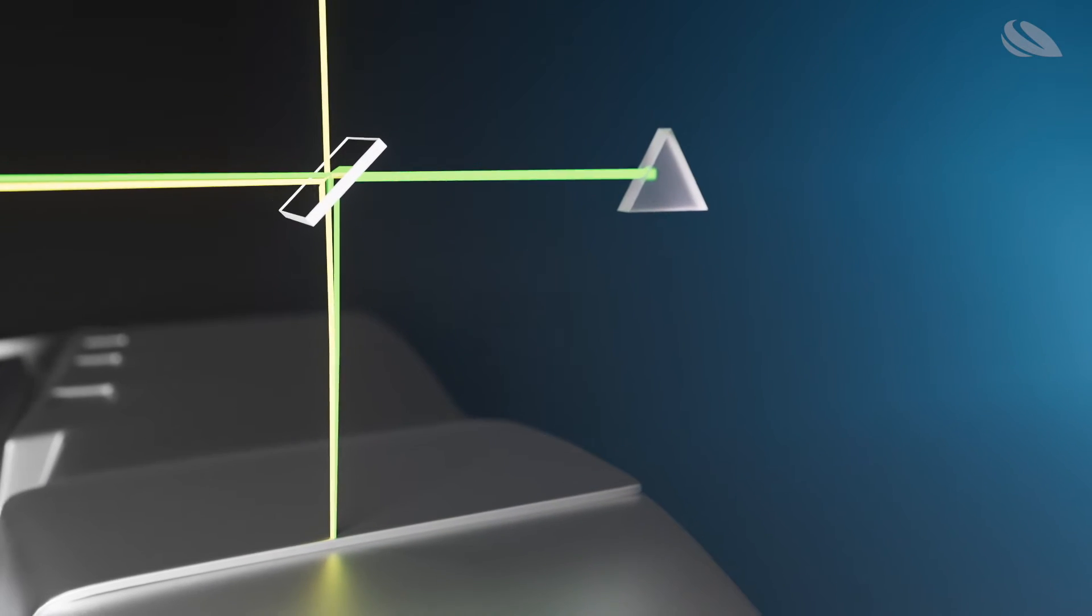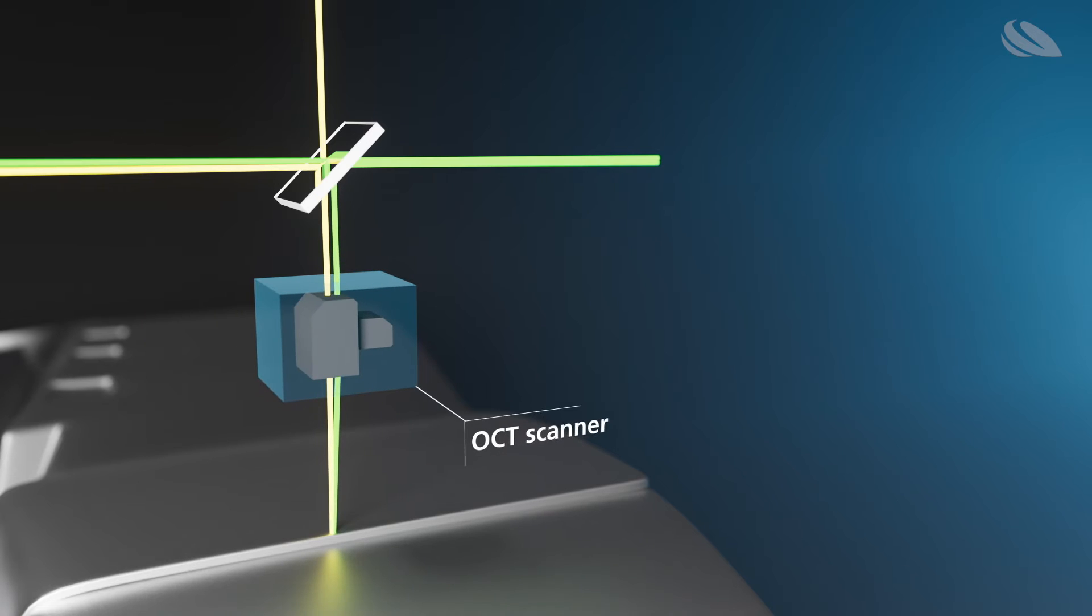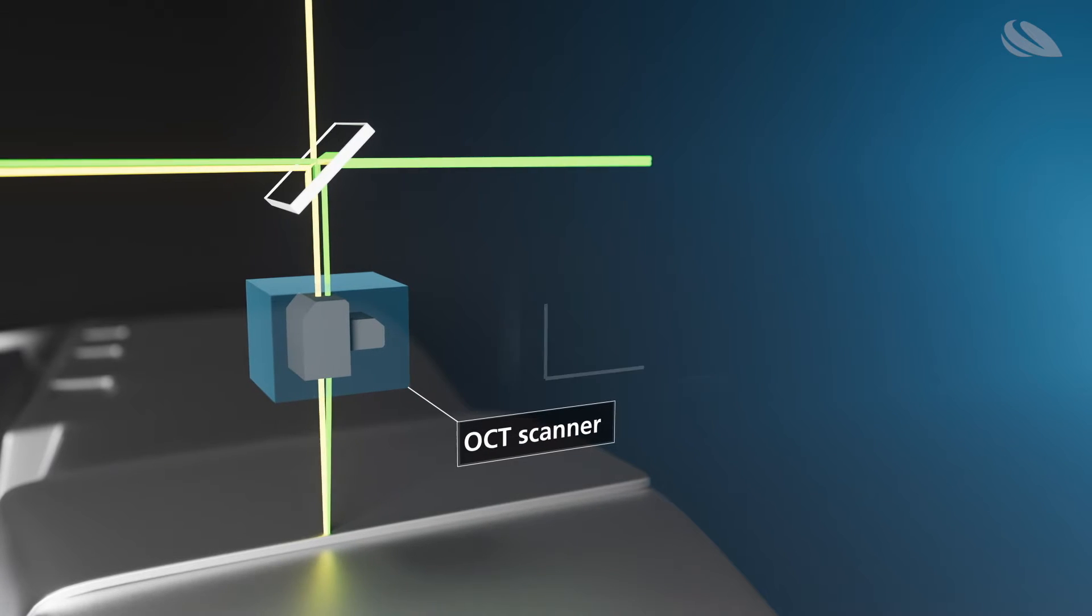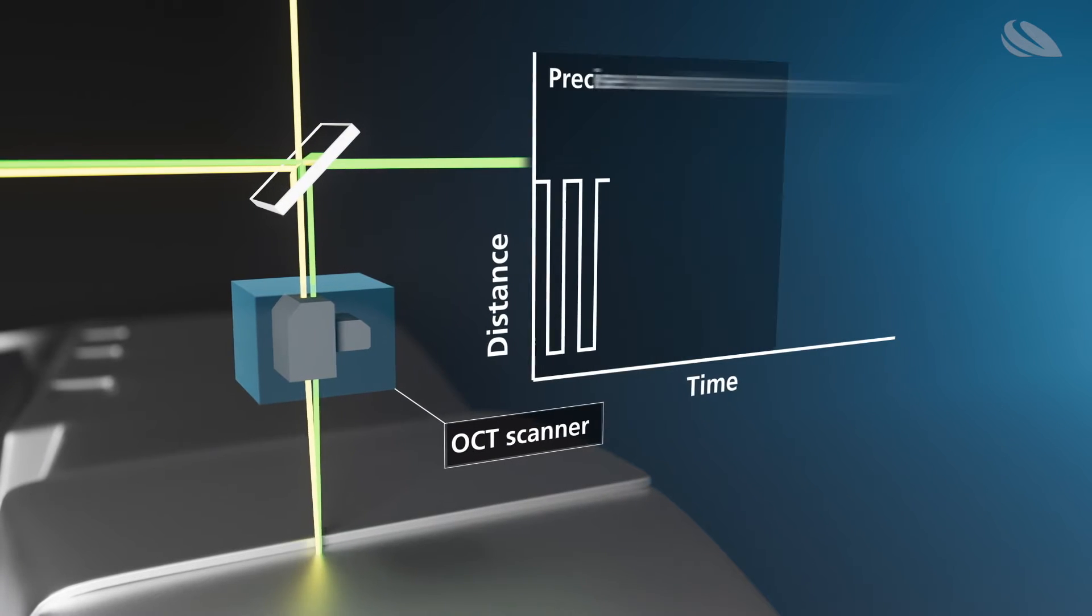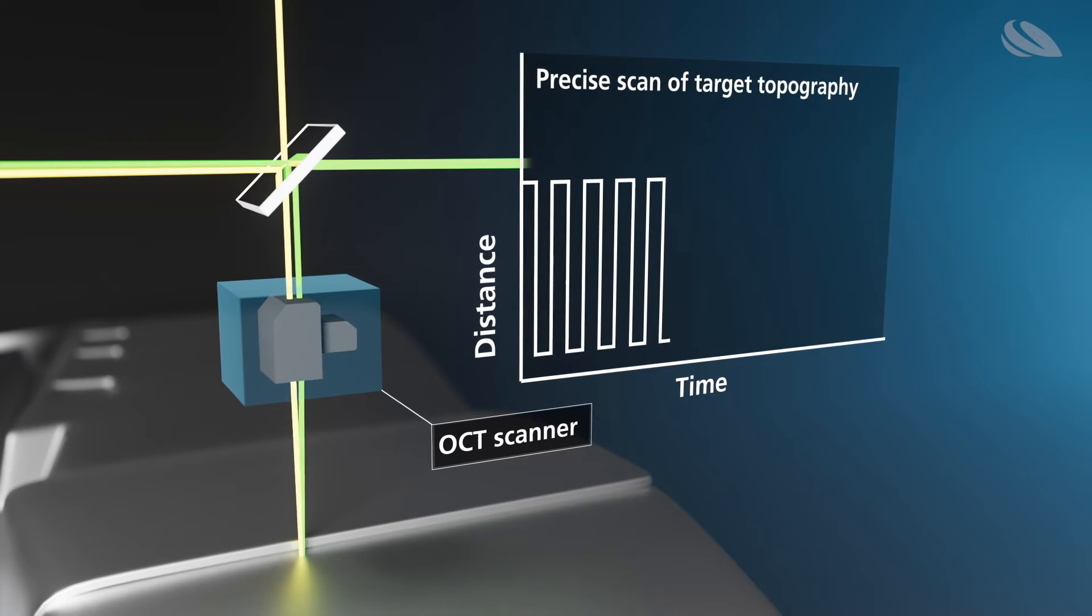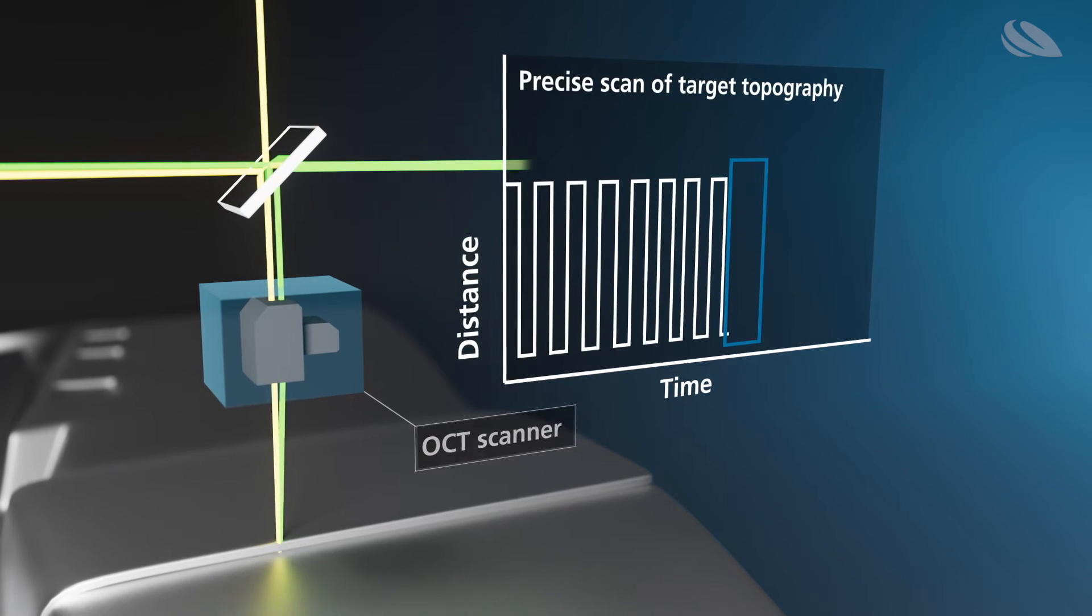The use of a 2D galvo scanner in the OCT measurement path makes it possible to deflect the beam to any position in the scan field, and as such it can be used to scan the surface of the part to be welded.